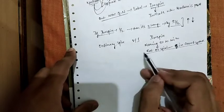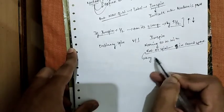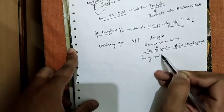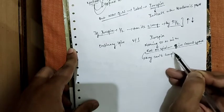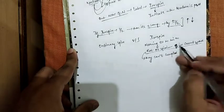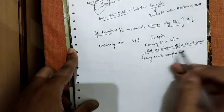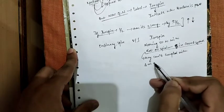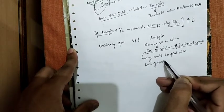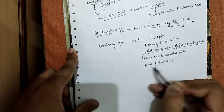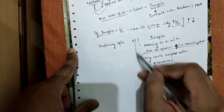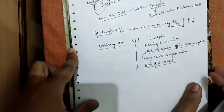Therefore, isospin cannot be coupled with the angular momenta of nucleons, whereas all these things are applicable in ordinary spin.